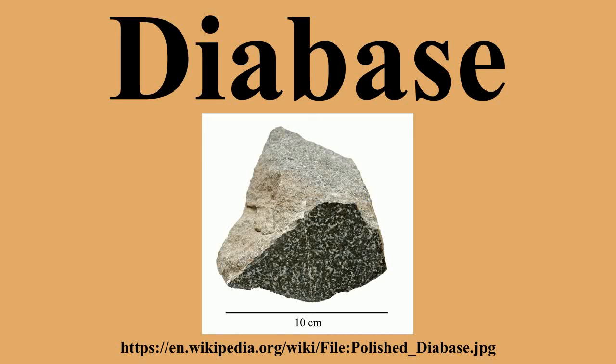Diabase dikes occur in regions of crustal extension and often occur in dike swarms of hundreds of individual dikes or sills radiating from a single volcanic center. The Palisades Sill, which makes up the New Jersey Palisades on the Hudson River near New York City, is an example of a diabase sill.